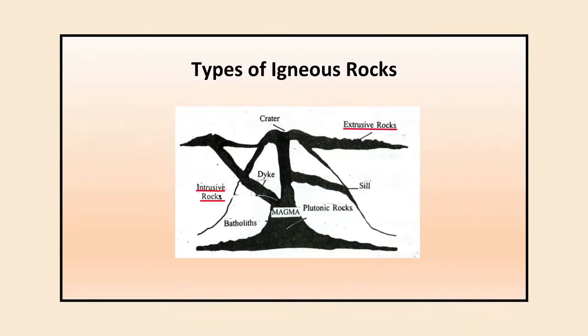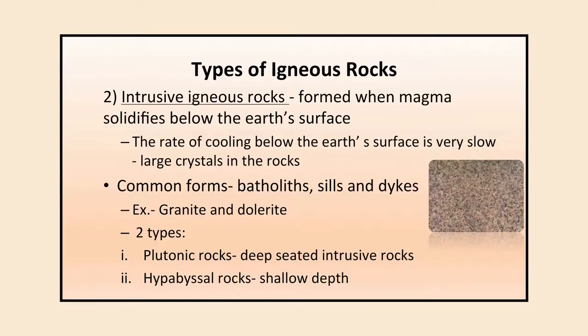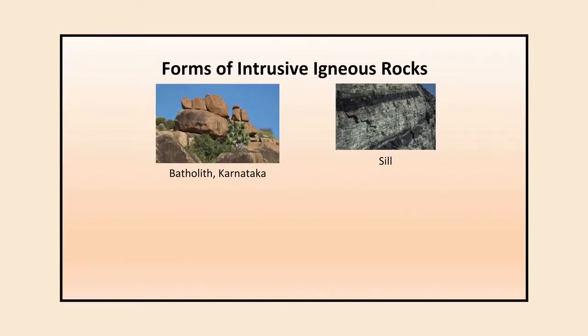The second type of igneous rock is intrusive igneous rocks, formed when magma solidifies below the Earth's surface. The cooling is slower and not directly in contact with the atmosphere, so the crystals formed are large and can sometimes be seen with the naked eye. Common forms of intrusive igneous rocks are batholiths, sills, and dikes. Batholiths are dome-shaped, sills are horizontally formed, and dikes are vertical in nature. Examples are granite and dolerite.